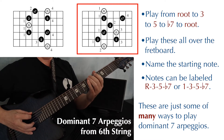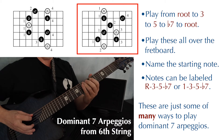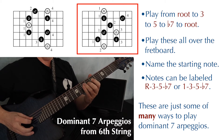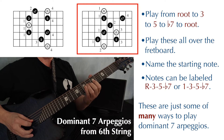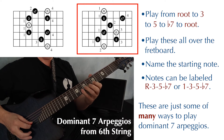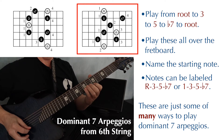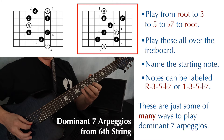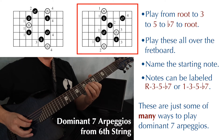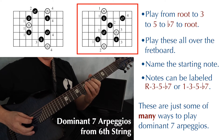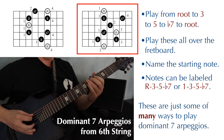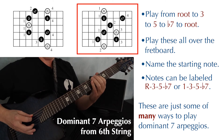By chord label, that would be one, three, five, flat seven, one, three, five, flat seven, one, and back: flat seven, five, three, one, flat seven, five, three, and one.